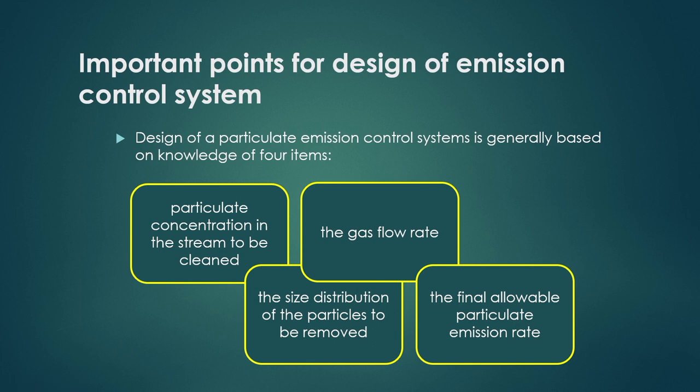For design of equipment called an emission control system, design of a particulate emission control system is generally based on knowledge of four items: the particulate concentration in the stream to be cleaned, the gas flow rate, the size distribution of particles to be removed, and the final allowable particulate emission rate. These are the four components to be considered for design of the emission control system.